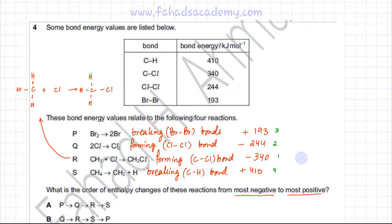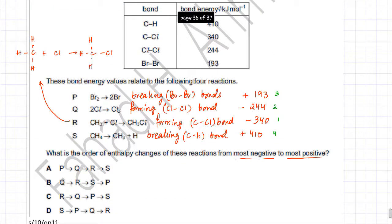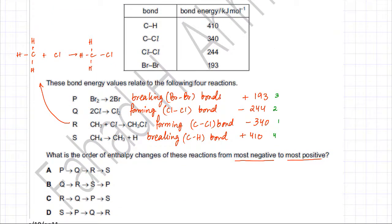There's only one option actually that's starting with R, so that's going to be option C. Option C is the correct option. You're going to start from the most exothermic, most negative, to the most positive. So option C is the correct answer for this question.